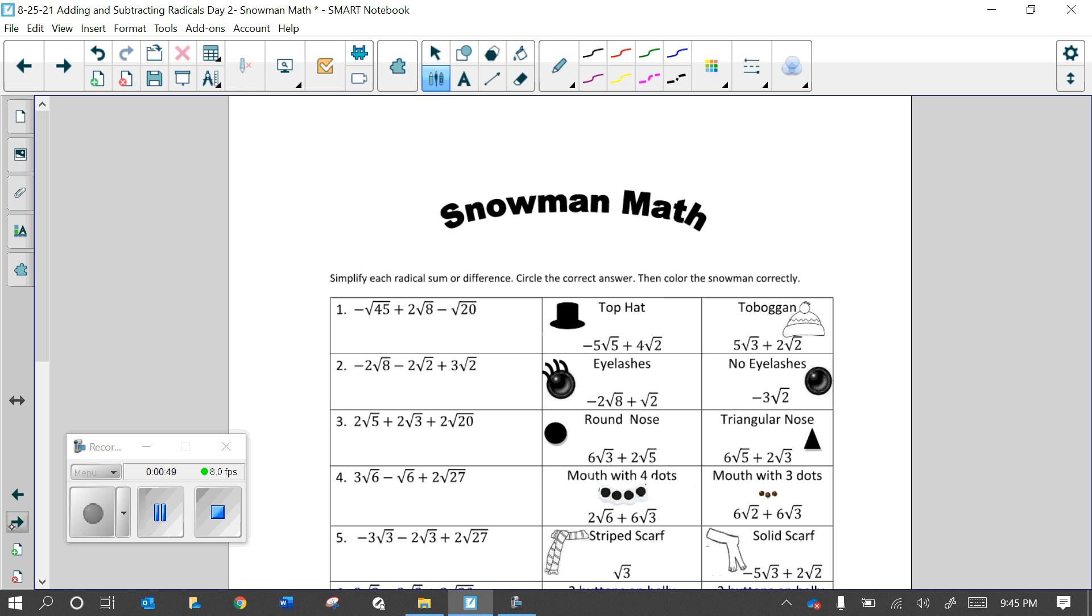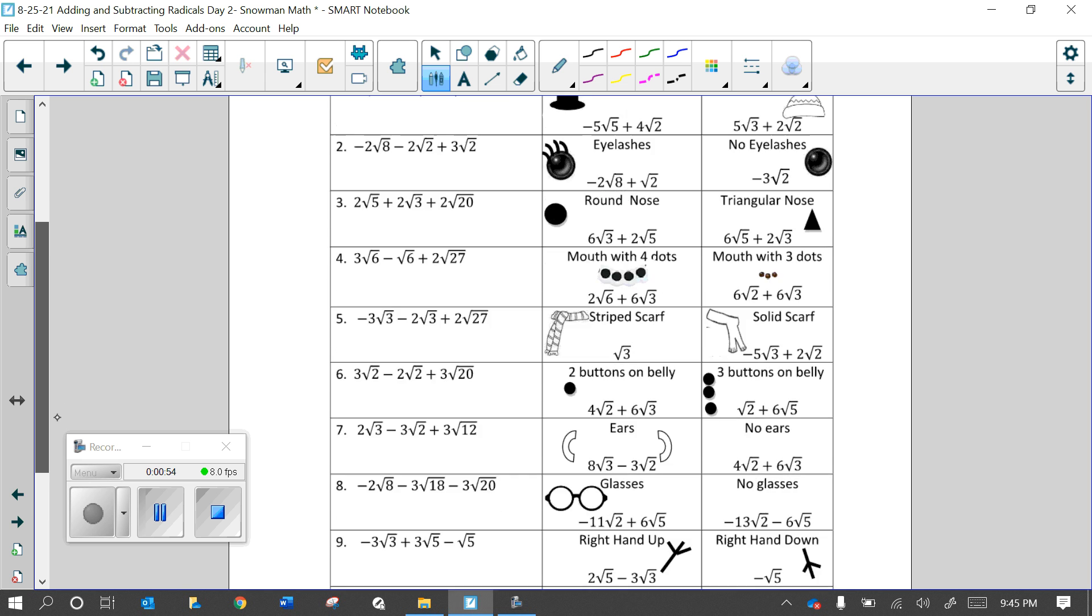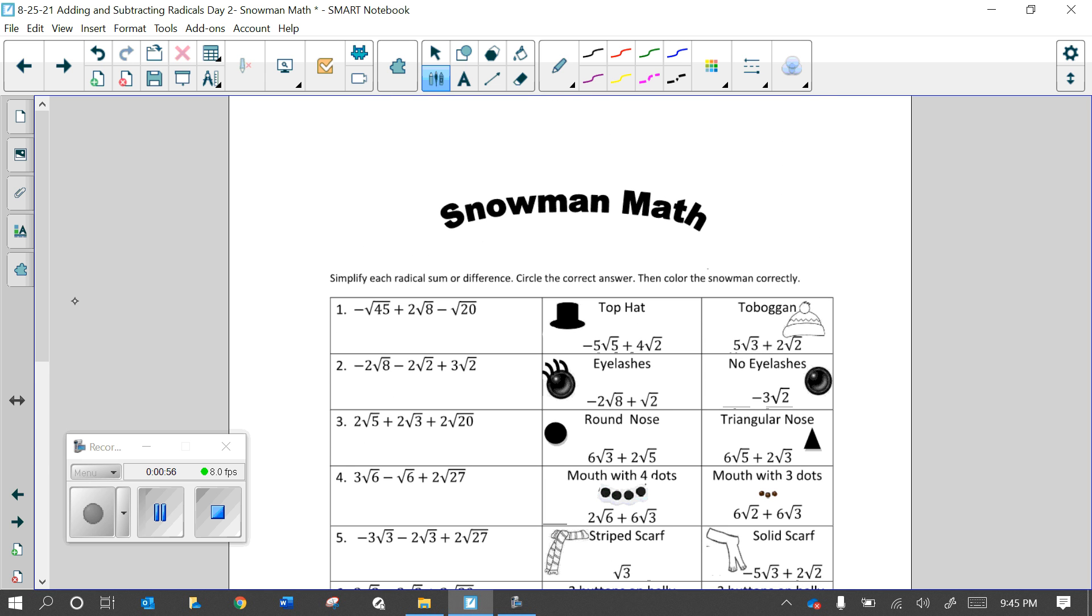So how this works, you have questions one through ten, and you are either adding, subtracting, or a combination of both with radicals. So what you are to do is to simplify each radical sum or difference. After you do that, circle the correct answer. And then based off your answer, color the snowman correctly. So I want to do example one with you, or problem one with you, just so you know what to do.